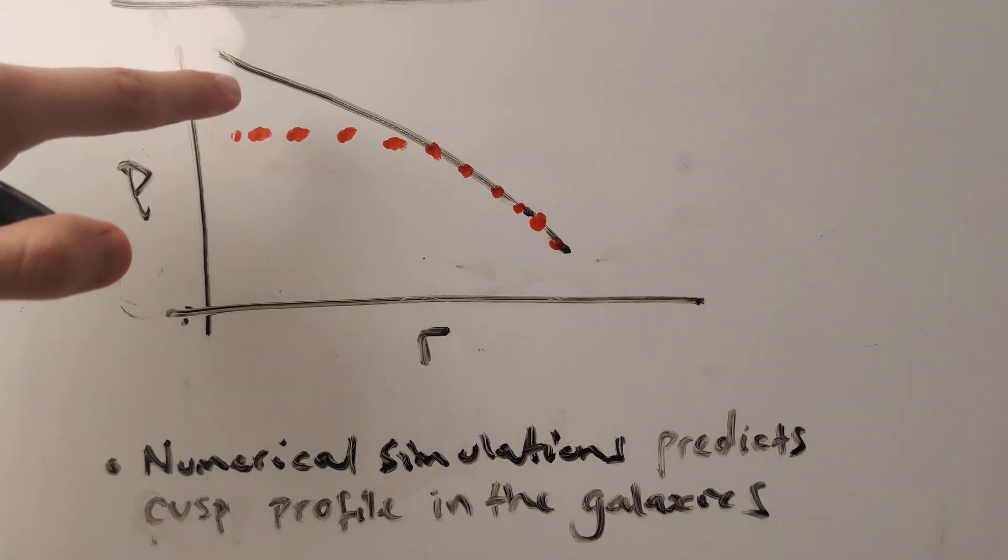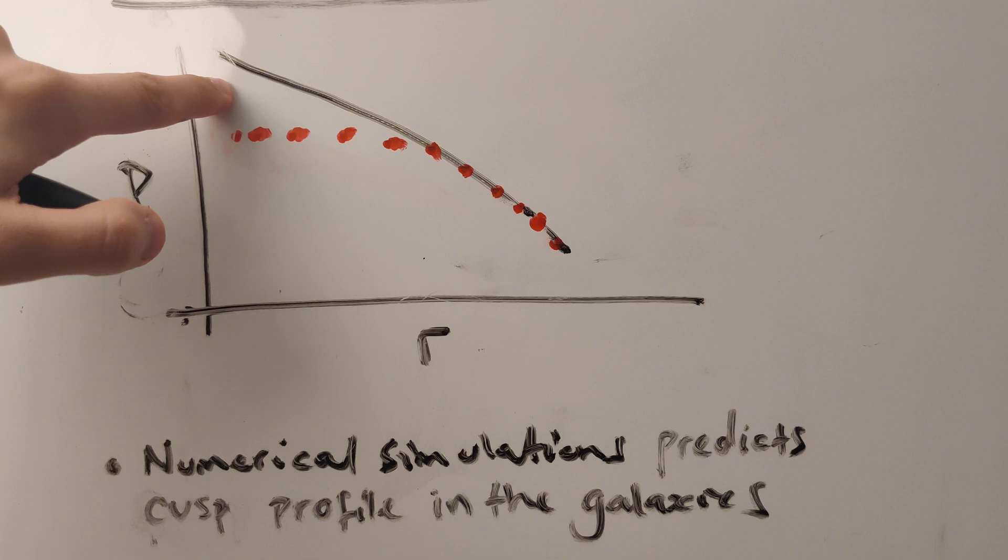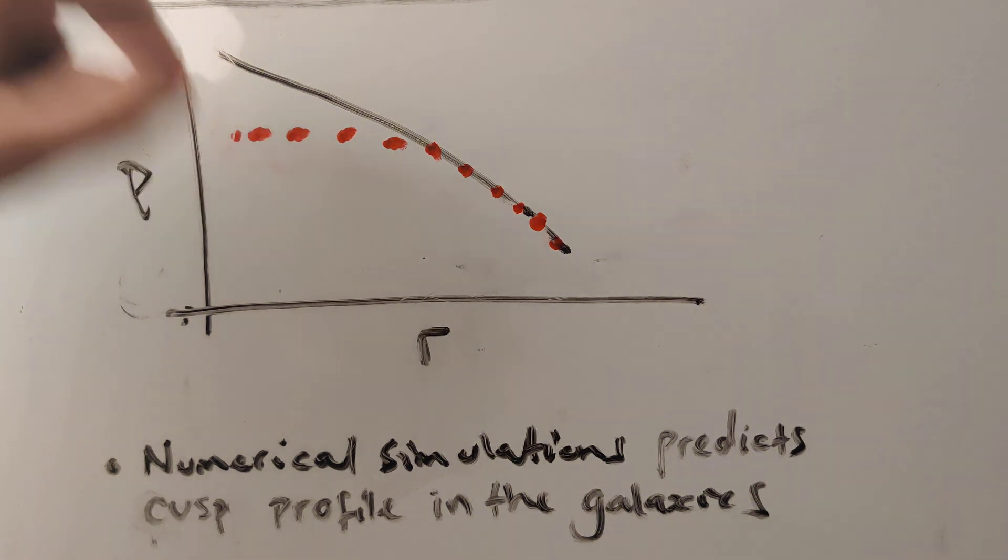This black line is called the cusp, the cusp profile. And this red dot is called the core profile. And that is the cusp-core problem in a nutshell.